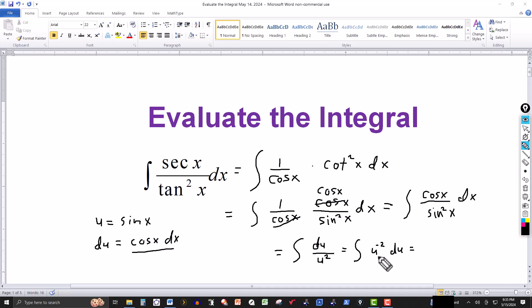Just like integral x to the negative 2 dx, I add 1 to the exponent there, and that'll give me u to the negative 1. And then I divide the coefficient by negative 1, and in this case it's 1, 1 divided by negative 1 is still a negative, so I'll just put the negative here. And then I got my constant of integration.